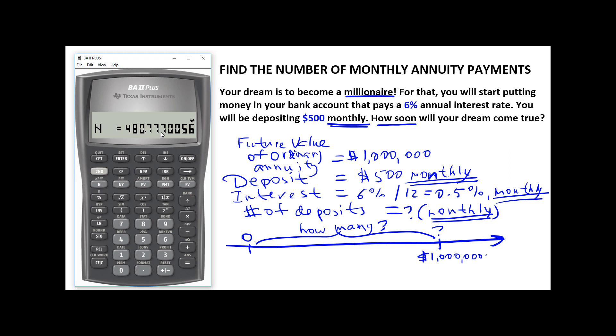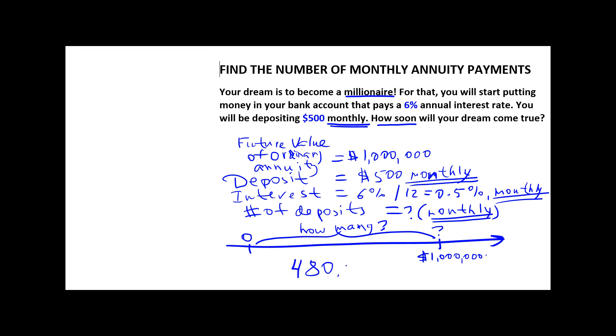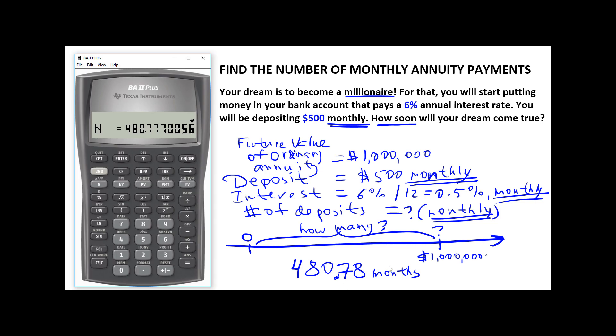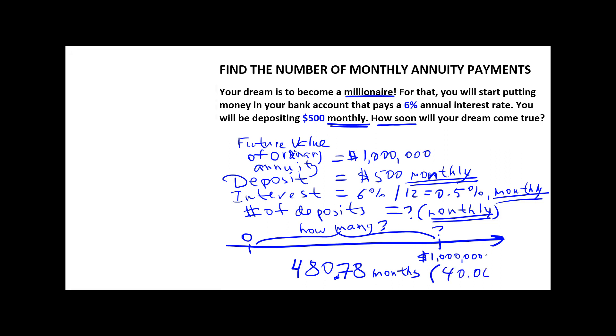480.7770056 months. Okay, so let's write it down. 480.78 months. And because it's too large, let's just make it simpler and see how many years that means. Because this is months, to get years, we need to divide the number of months by 12. So, I can actually continue with my calculations and press the divide button and then 12 and then equal. A little over 40 years. 40.06 years. And let's highlight it. 40.06 years. And this is our answer.